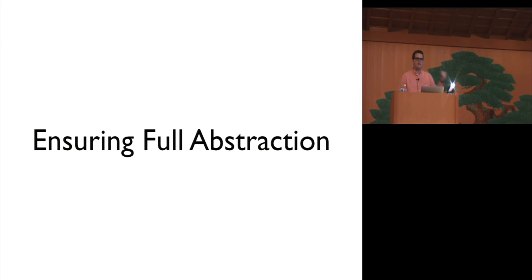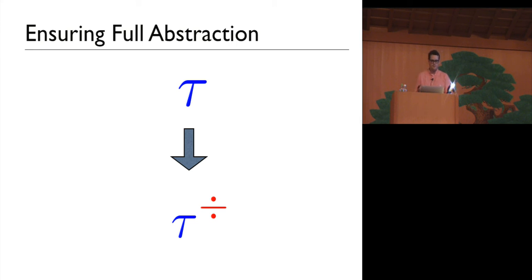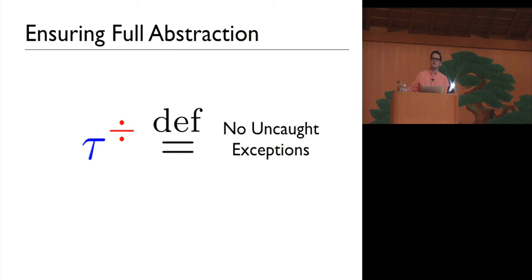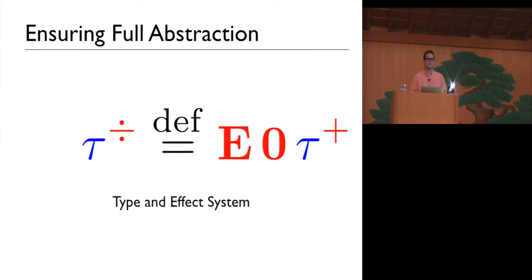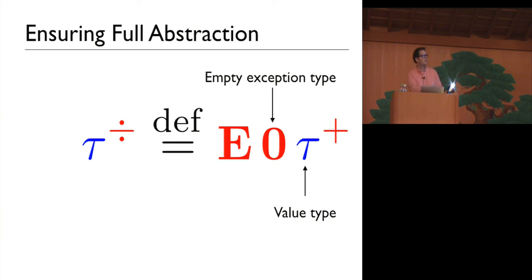How do we actually go about making our compiler fully abstract? We're going to use static types in our target language — write a type-preserving compiler — and the key to full abstraction is in the design of this type translation. We need to ensure that the target language type is precise enough to rule out behaviors that don't make sense in the source language. That means we can't have any uncaught exceptions flowing from the target language code to the compiled source programs. We'll guarantee this using a type and effect system in our target language, where E is a type constructor for possibly exception-raising computation.